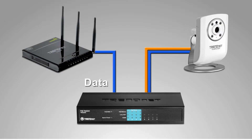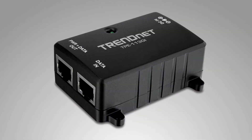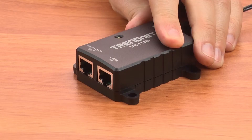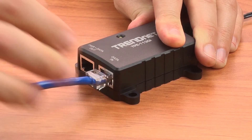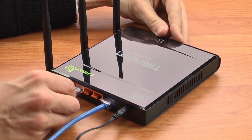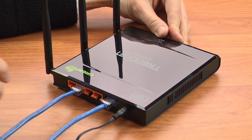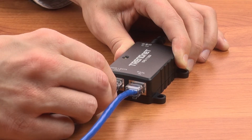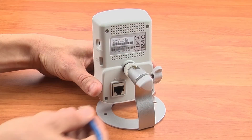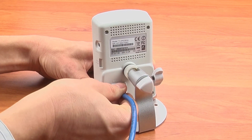Now, let's say you don't want to buy a PoE switch, and you have a free port available on your existing router. No problem. You can use a PoE injector in this scenario. Simply install TrendNet's Power over Ethernet injector near the router by plugging it in, connecting it to one of the non-PoE ports, and then running an Ethernet cable to your IP camera.